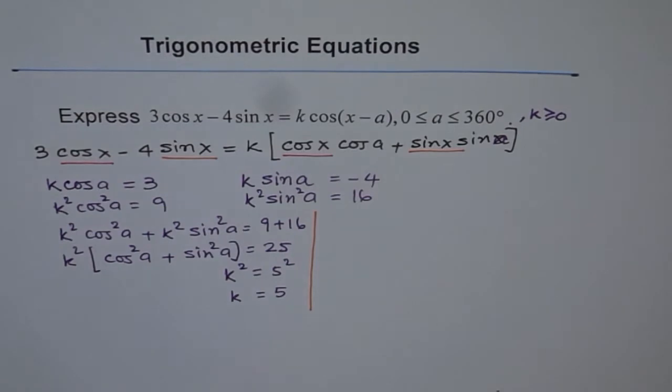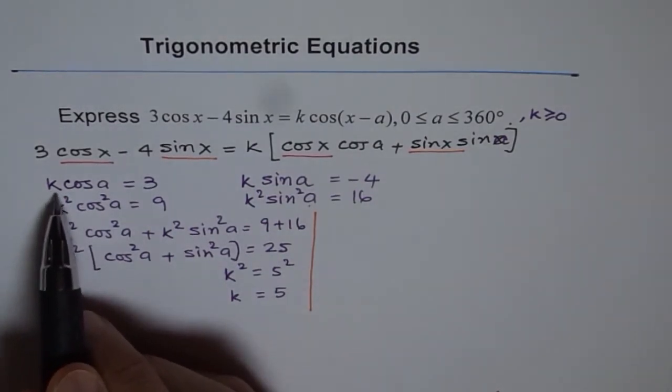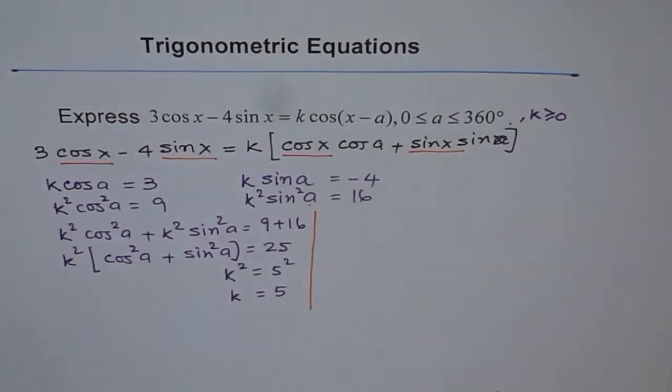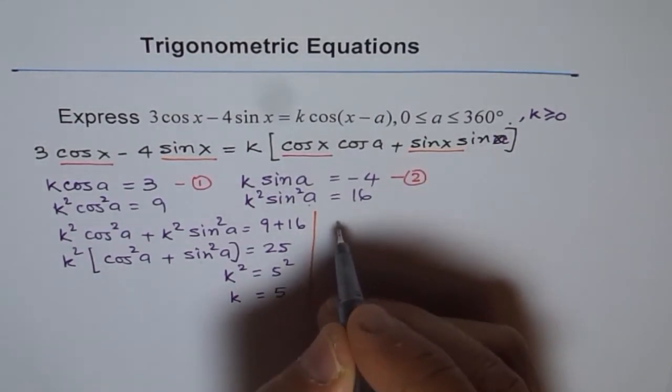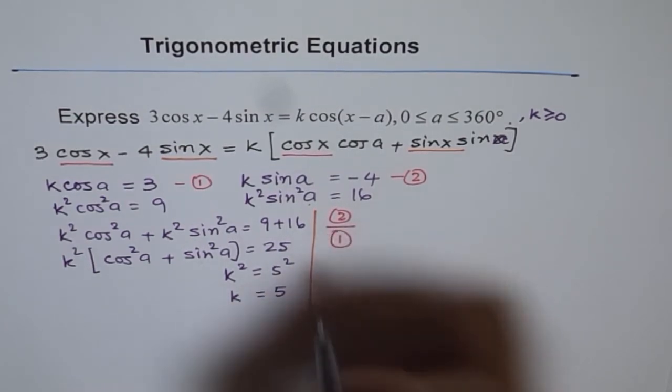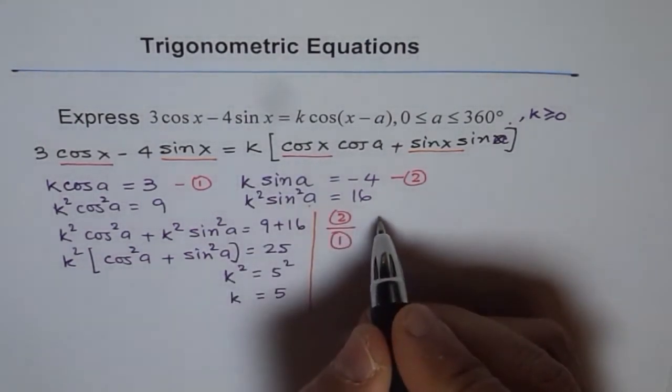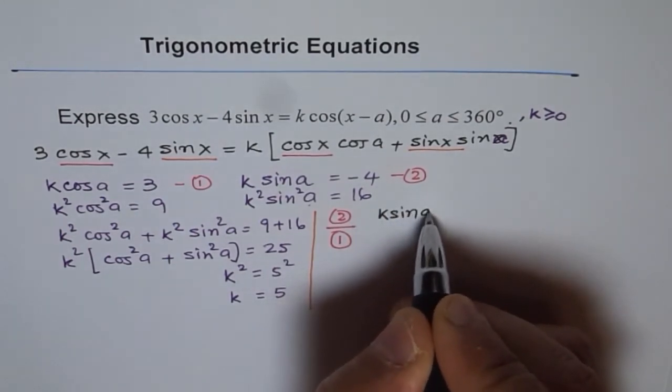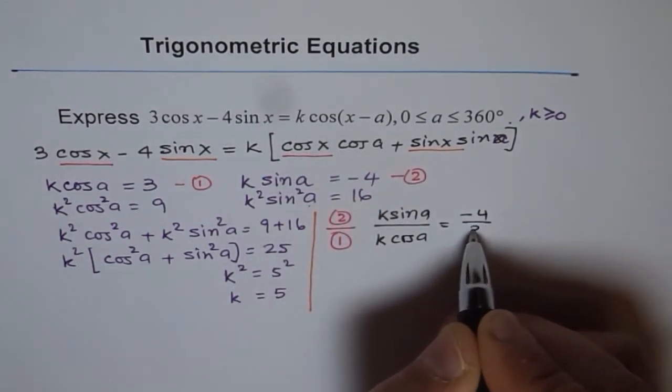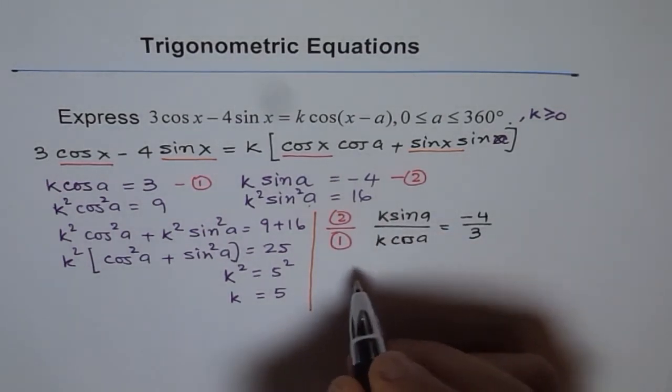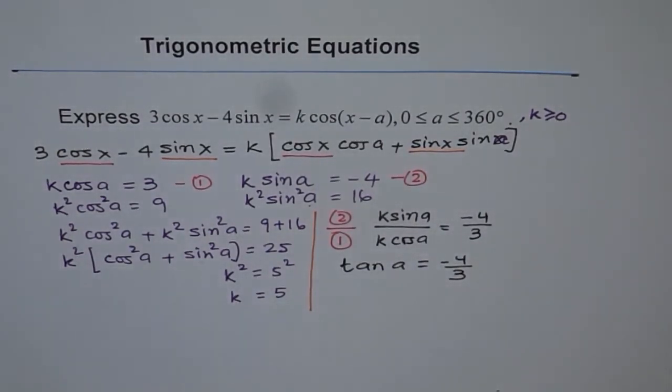Now how can you get the angle a? We know k times cos a is 3 and k times sin a is minus 4. Let me give equation numbers: this is 1 and this is 2. If we divide equation 2 over equation 1, we get k times sin a divided by k times cos a equals minus 4 over 3. k cancels out and we get tan a equals minus 4 over 3.